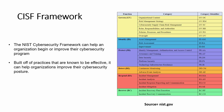In the NIST series we have an approach of six functions. Function number one is governance. Function number two is identify. Function number three is protect. Function number four is detect. Function five is respond. And function six is recover. In this video, we're going to discuss governance and one of its subcategories, which is called organization context.